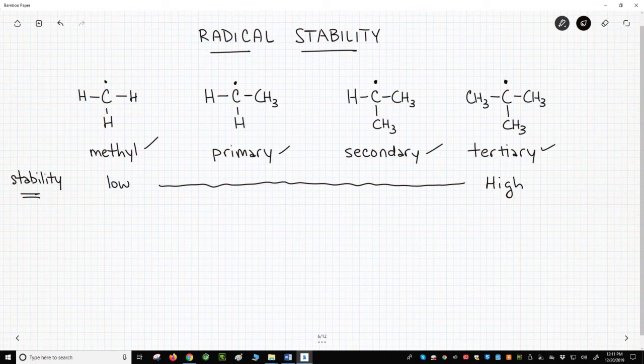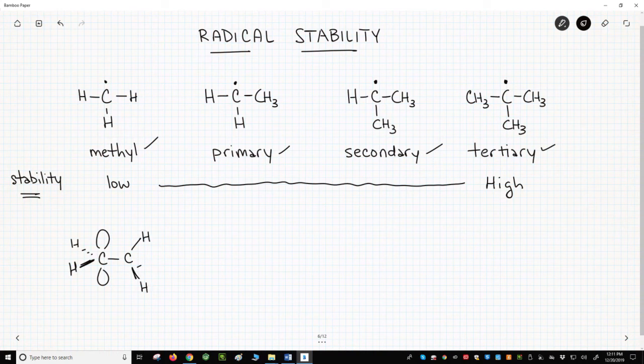With carbocations, we explain this trend with hyperconjugation. We said that the vacant p-orbital is stabilized by weakly interacting with a neighboring CH bond.